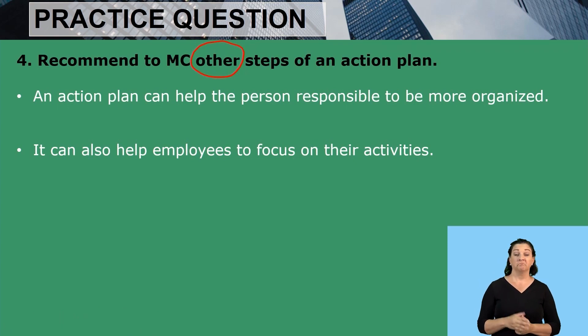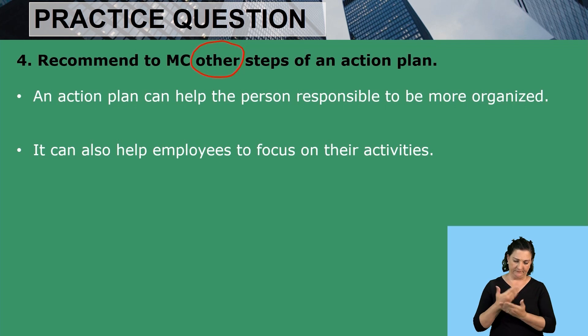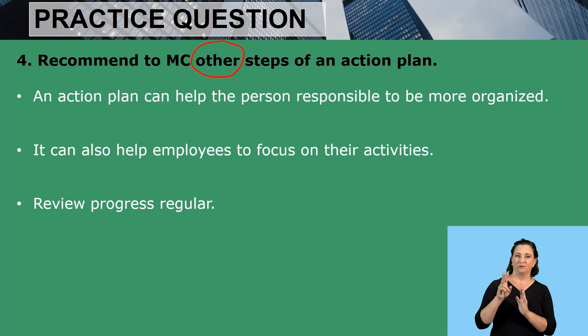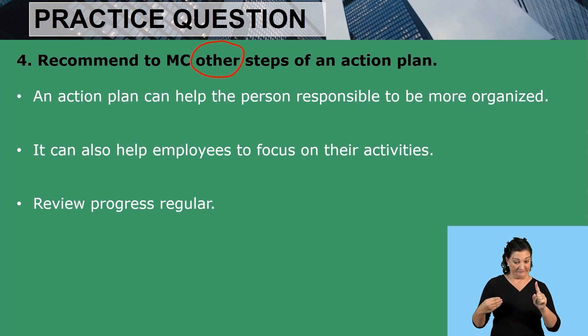An action plan can also help employees to focus on their activities. Through an action plan they can see the different roles they have to perform, and there won't be conflict with many employees performing one activity. Another step is to review progress regularly — are we moving forward, are we achieving the goals? If there are deviations, what measures are we taking to mitigate or completely get rid of those deviations?